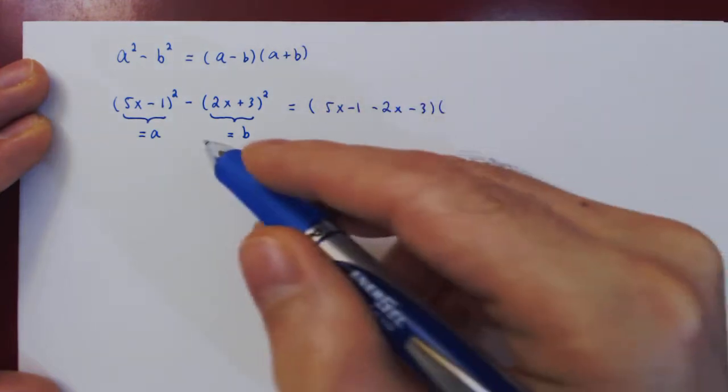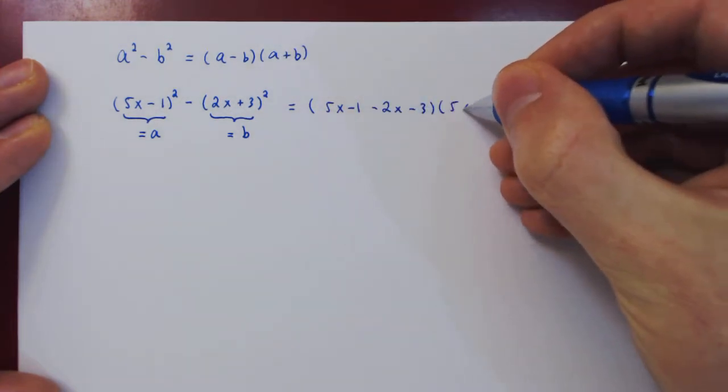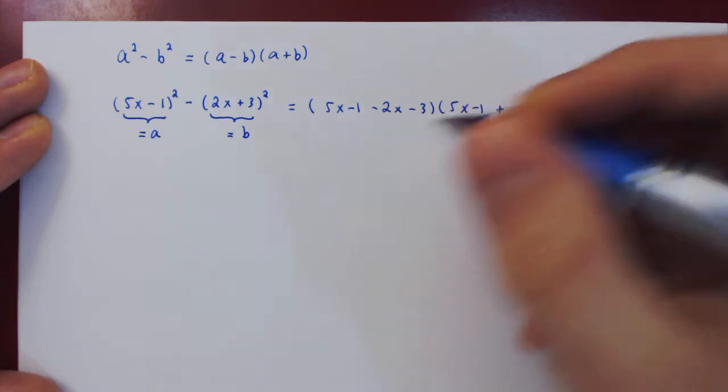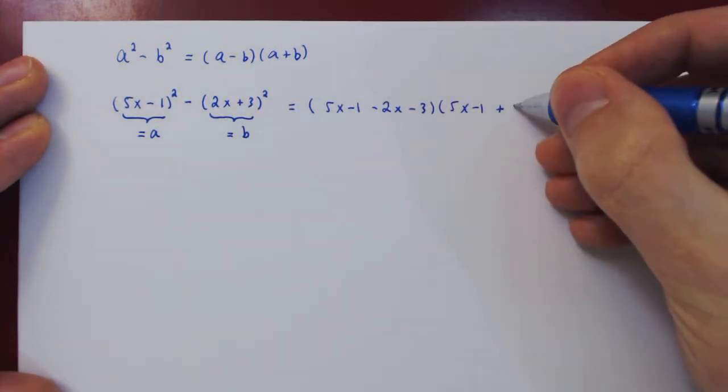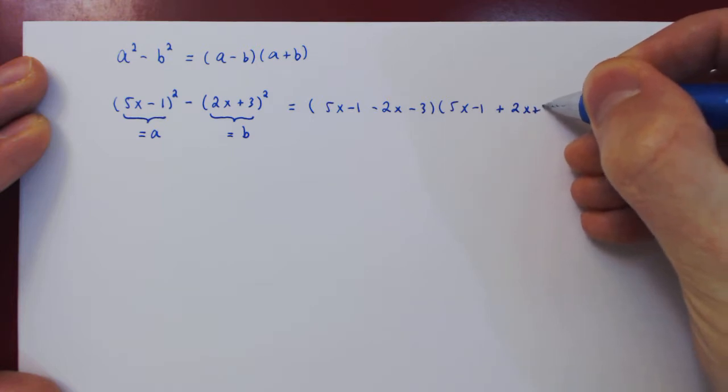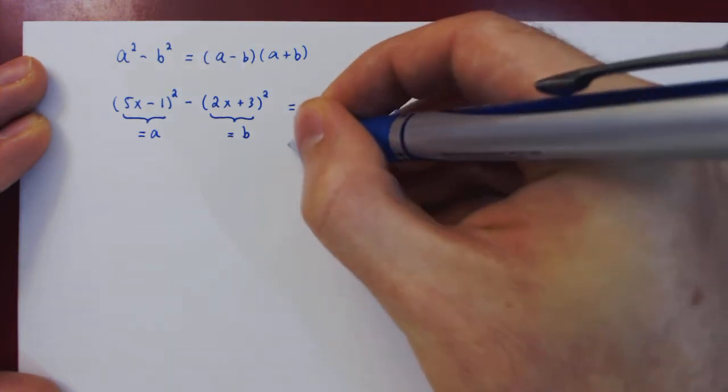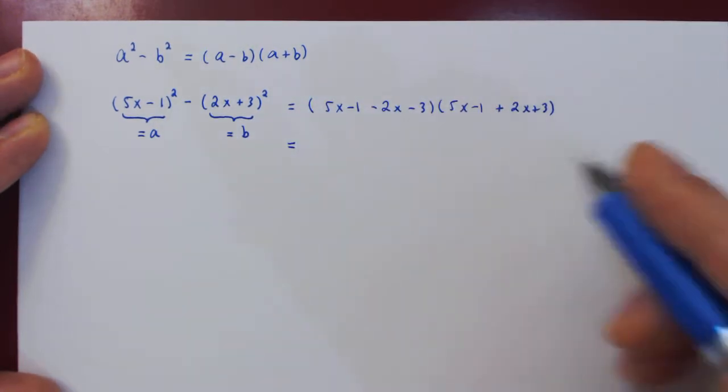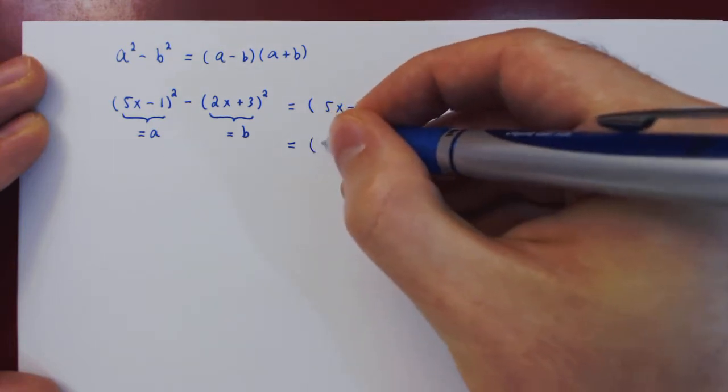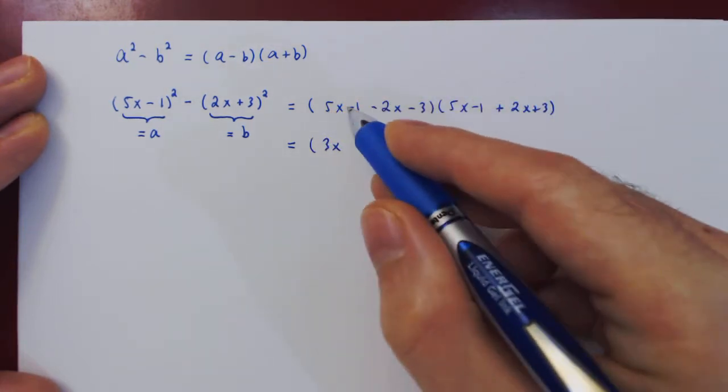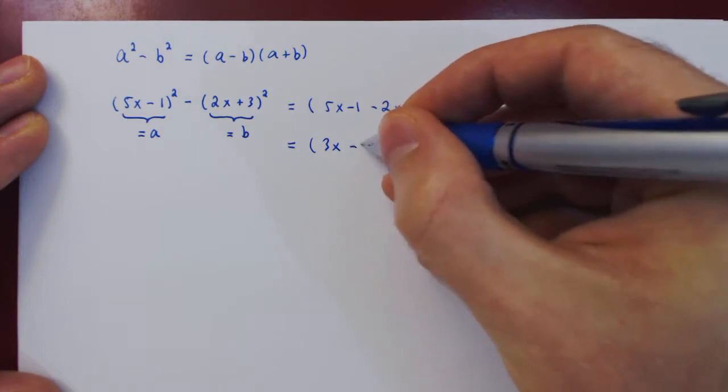Times a plus b, so 5x minus 1, plus now 2x plus 3. So let's simplify each individual factor. 5x minus 2x is 3x. Negative 1, negative 3, negative 4.